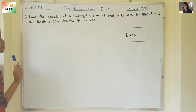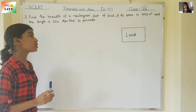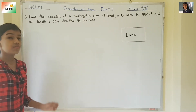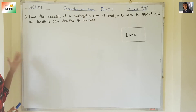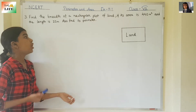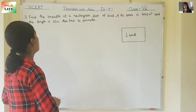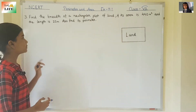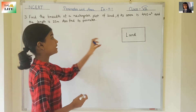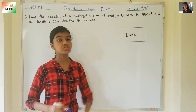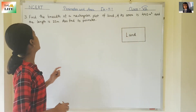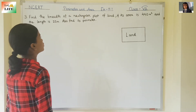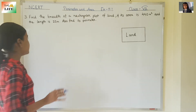Find the breadth of a rectangular plot of land if its area is 440 meter square and the length is 22 meter. Also find its perimeter. So the area is given. You can see this is a rectangular plot of land, so we need to find the breadth. Area is 440 meter square, length is 22 meter, and then we need to find its perimeter.